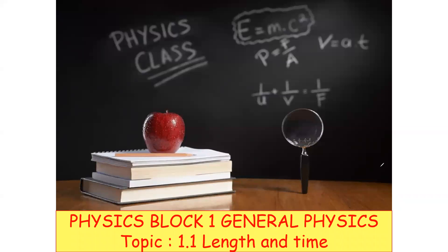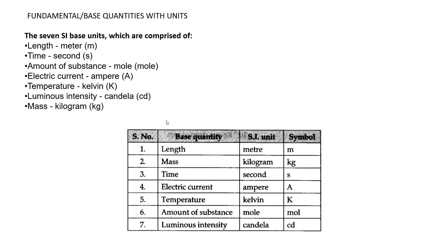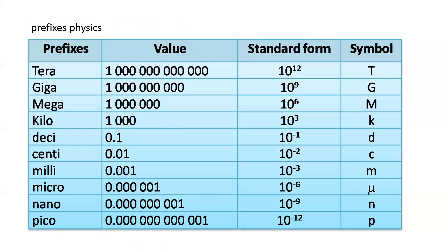This is Topic 1.1 Length and Time. As a quick revision from the last session, we started with the fundamental or base quantities which include length, mass, time, electric current, temperature, amount of substance, and luminous intensity — but you need to learn the first five. Then the derived quantities, which are calculated by two or more measurements, such as volume, density, force, energy, and pressure. The prefixes you have to learn: tera 10^12, giga 10^9, mega 10^6, kilo 10^3, milli 10^-3, micro 10^-6, nano 10^-9, and pico 10^-12.